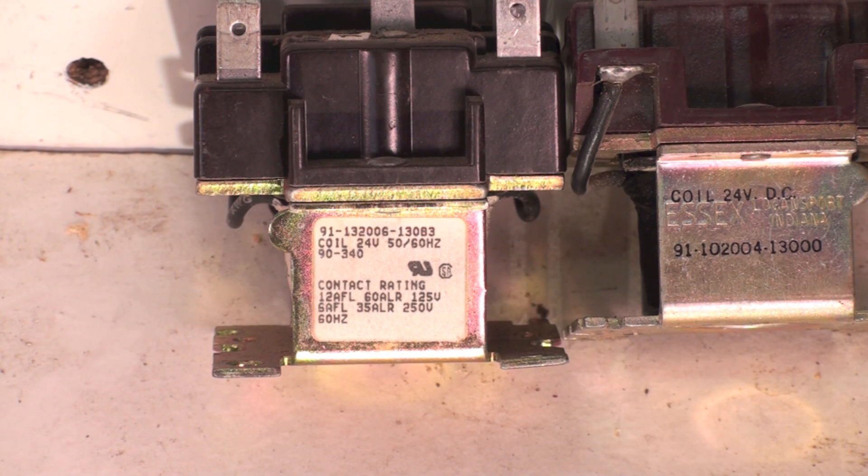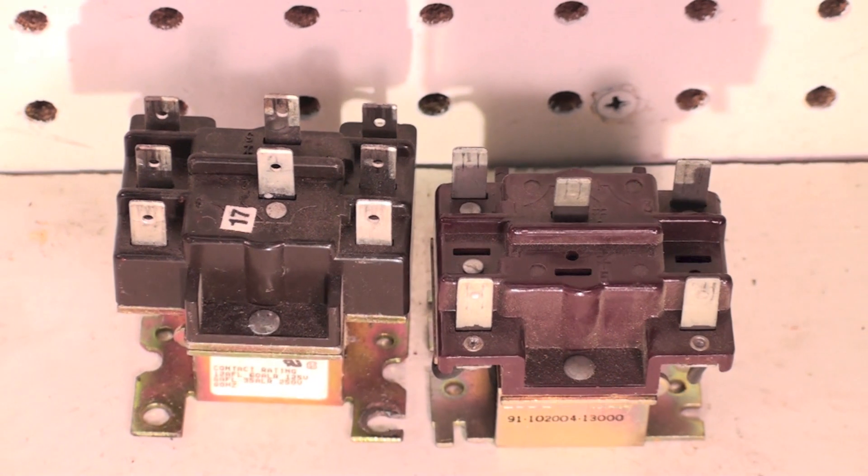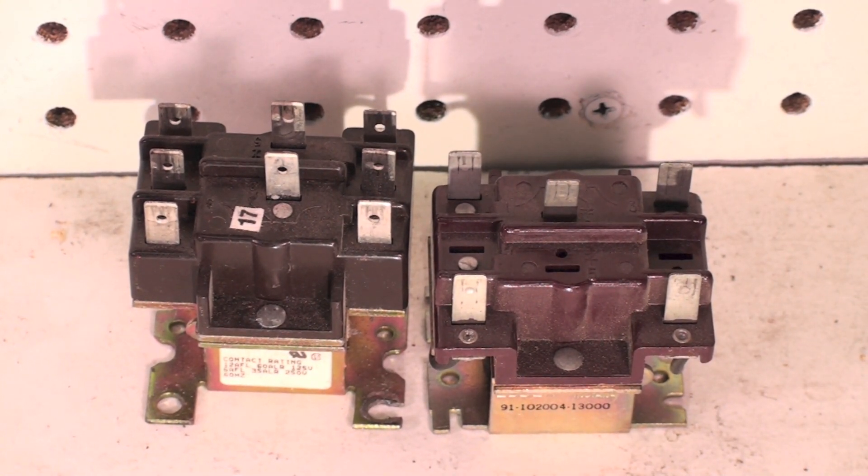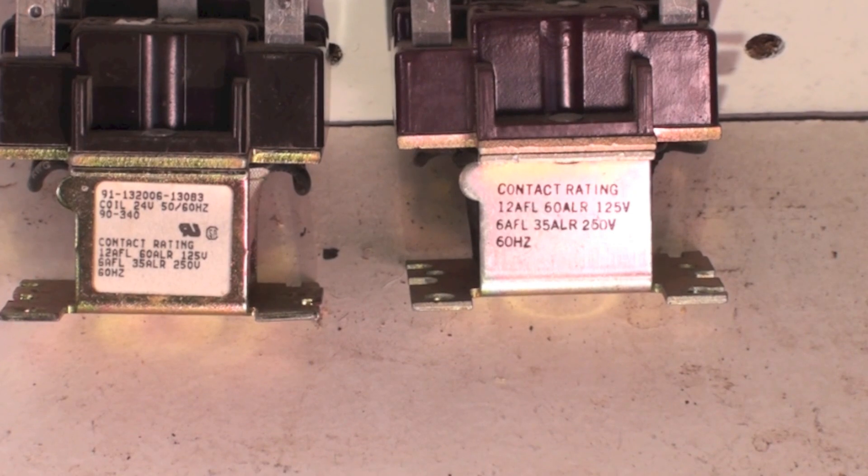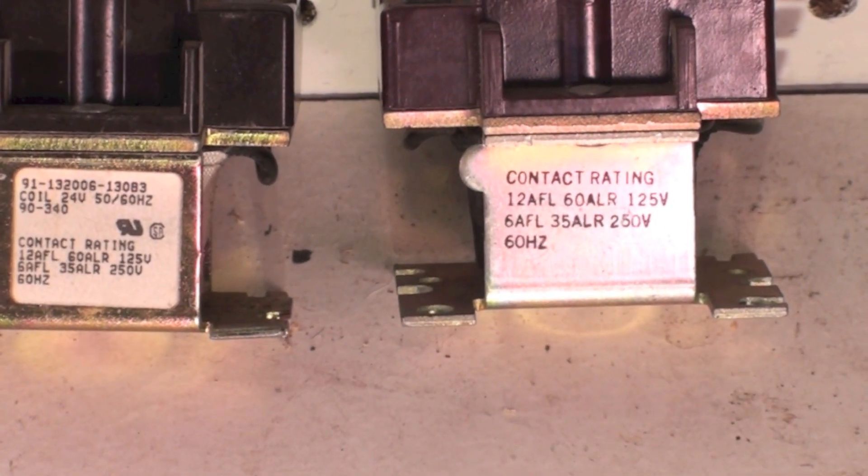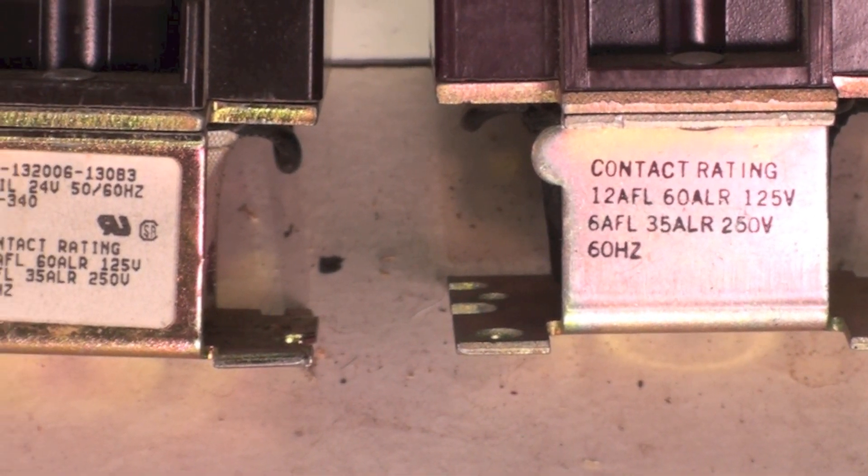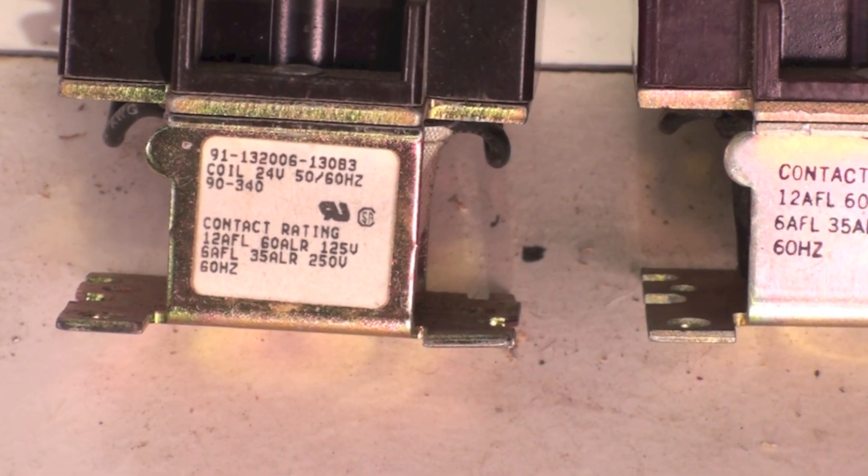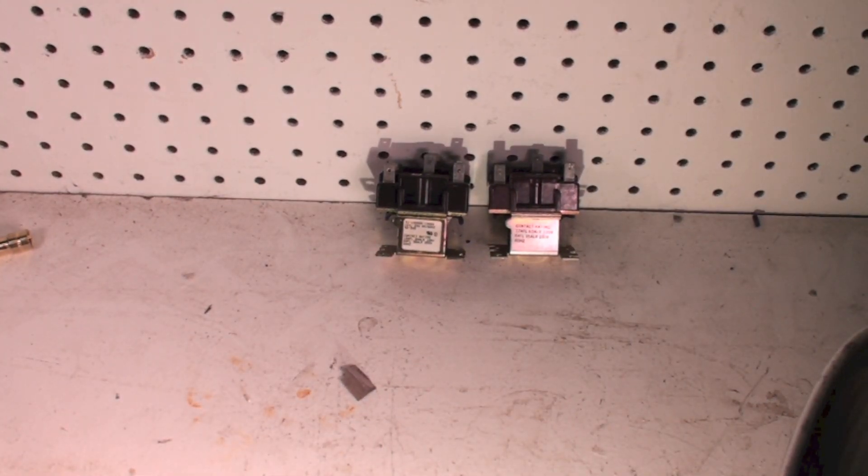The difference in these is simply the coil. If you look at the relays themselves, they're pretty much the same. They're both 12 amp full load. Here I've turned around one of the relays so that you can see the full amp load. The DC relay is 12 amps and the AC is also 12 amps, so essentially these relays have to do the same amount of work. The only difference is the coil.